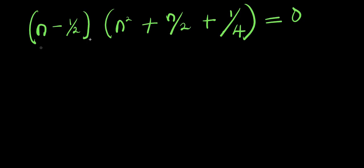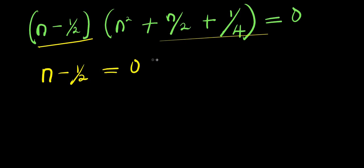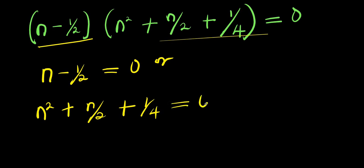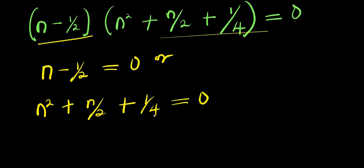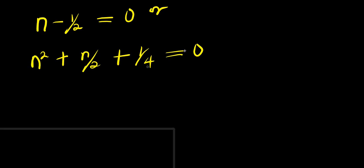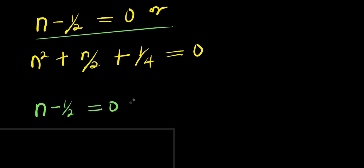So right now I'm going to equate each of these factors to 0. We have n minus 1/2 equals 0, or n² plus n/2 plus 1/4 equals 0. Let's solve the first one: n minus 1/2 equals 0, meaning that n equals 1/2. That is my first solution, n₁.